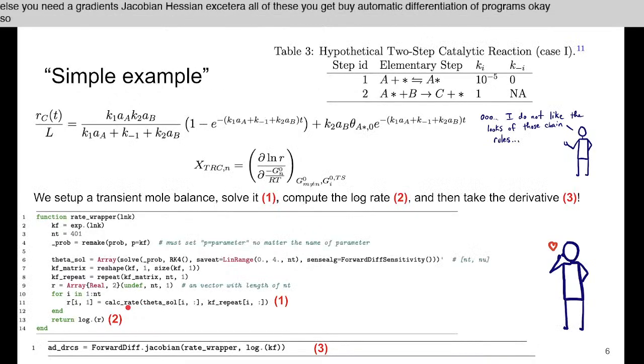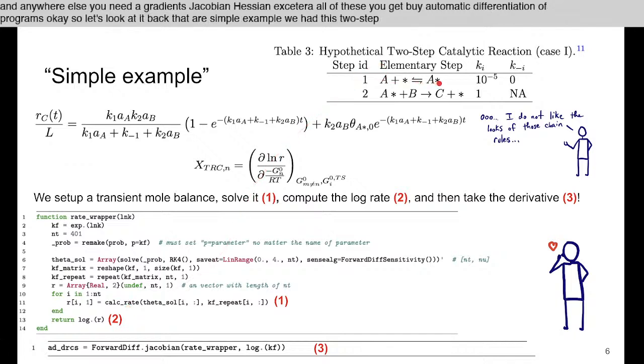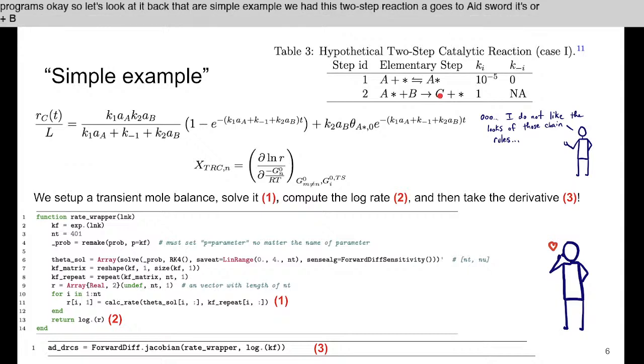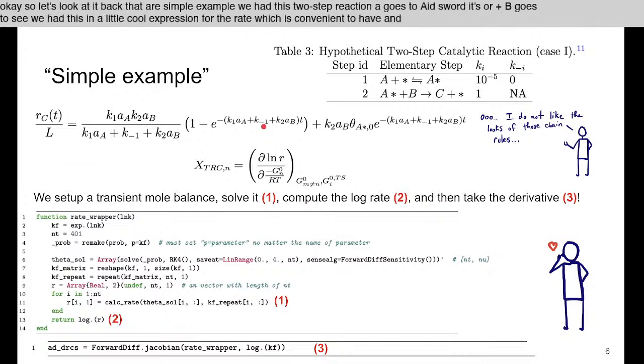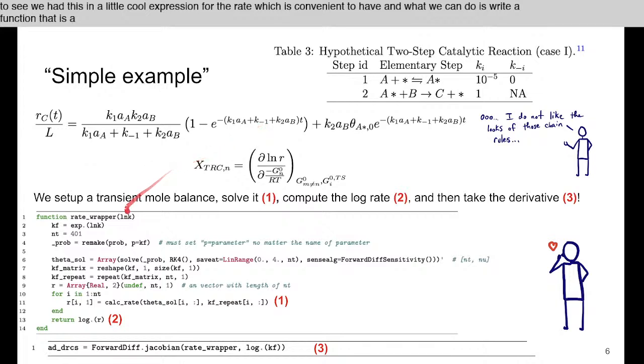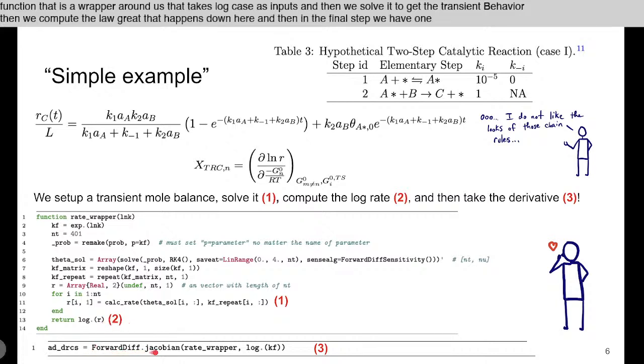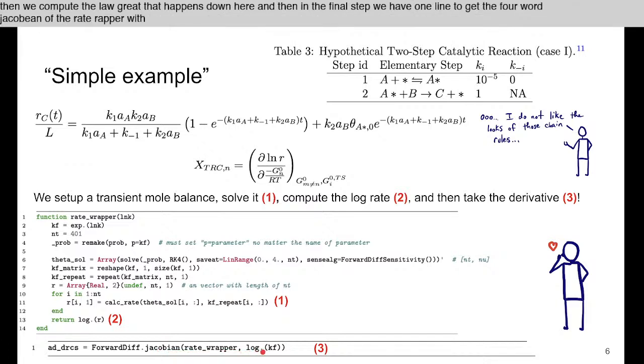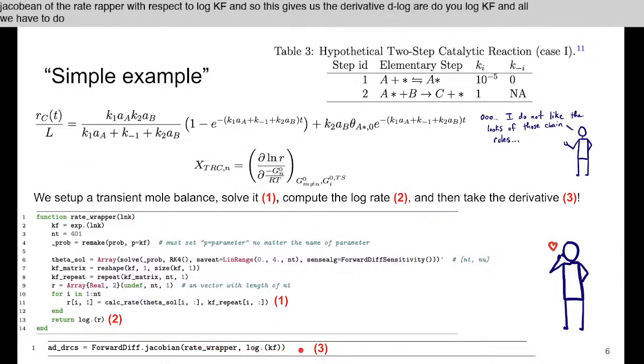Let's look back at our simple example. We had this two-step reaction: A goes to adsorbed A, adsorbed A plus B goes to C. We had this analytical expression for the rate which is convenient to have. What we can do is write a function that is a wrapper around this that takes log k's as inputs, and then we solve it to get the transient behavior. Then we compute the log rate, and in the final step we have one line to get the forward jacobian of the rate wrapper with respect to log kf. This gives us the derivative d log r d log kf. All we have to do then is plot it. It's very straightforward as long as we can write functions that we can take derivatives of the output with respect to inputs.